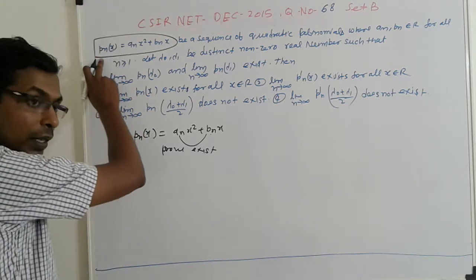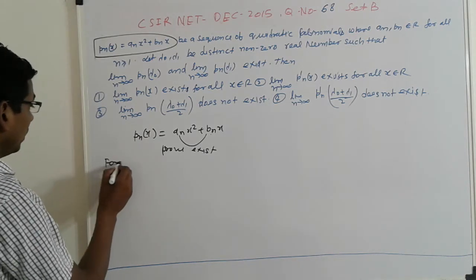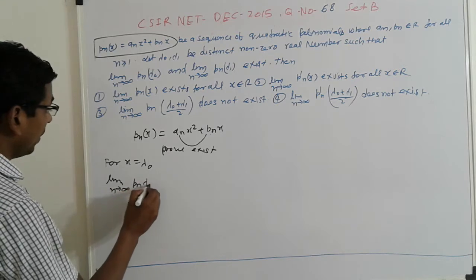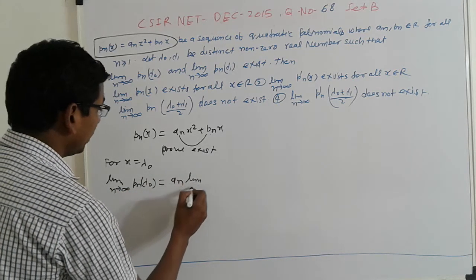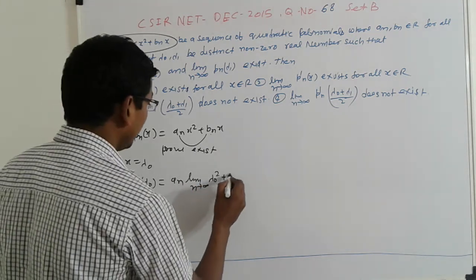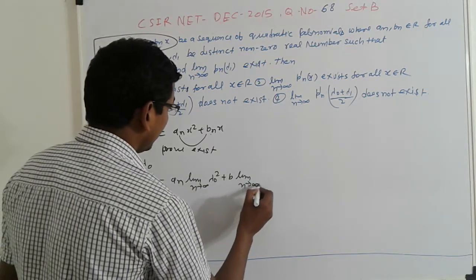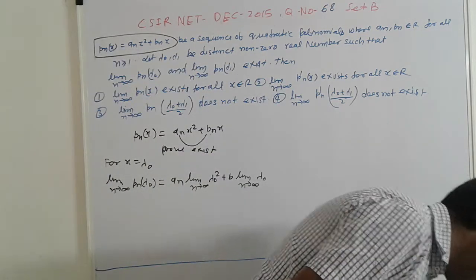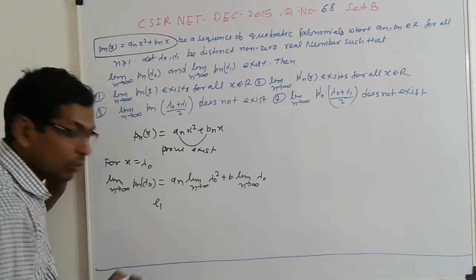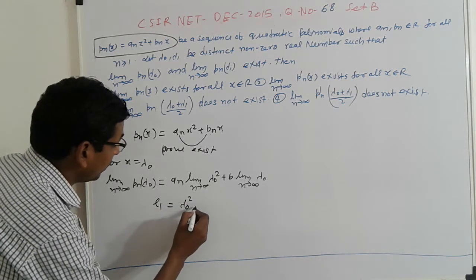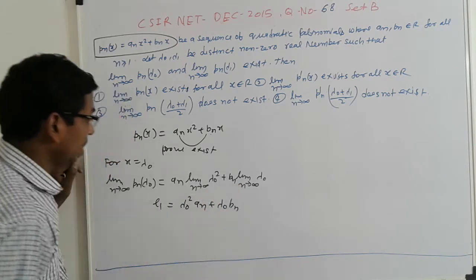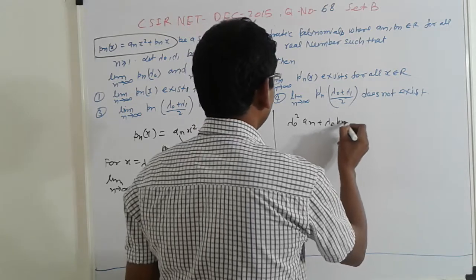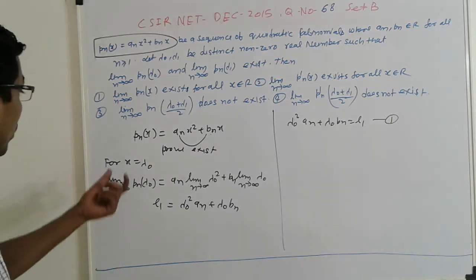Taking the limits: first, for x = λ₀, we have lim (n→∞) p_n(λ₀) = λ₀²·lim(a_n) + λ₀·lim(b_n). Since this limit is given to exist, suppose its value is l₁. So we get the first equation: λ₀²·a_n + λ₀·b_n = l₁.